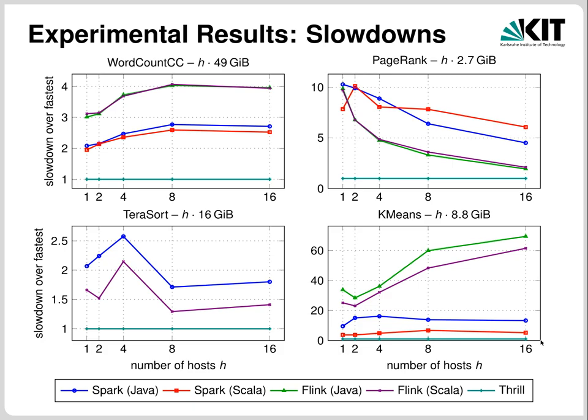Thrill really shines when performing calculations on relatively small items — that is why K-Means is so fast. These are just three-dimensional vectors which are scanned over and added together. In C++, this is a fast binary code hardware calculation, while with Java and Scala there is considerable overhead due to the JVM. In particular, Java appears to be less efficient than Scala, probably because Scala has better support for primitive types.